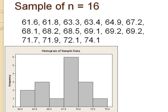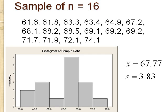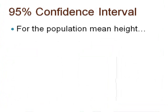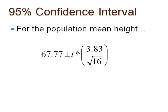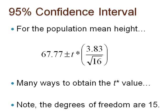The t-distribution in this case is appropriate because the sample data are not extremely skewed and there are no possible outliers. x-bar equals 67.77 and s equals 3.83. Now we will construct a 95% confidence interval for the population mean height. To complete the interval, we will need to calculate the t-star value. As I said, there are many ways to do this. Keep in mind, our degrees of freedom are 15 because we took a sample of 16.